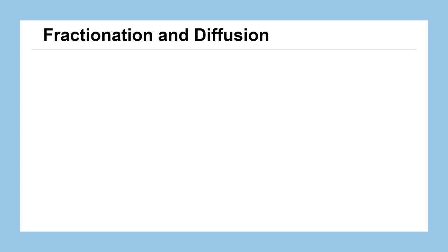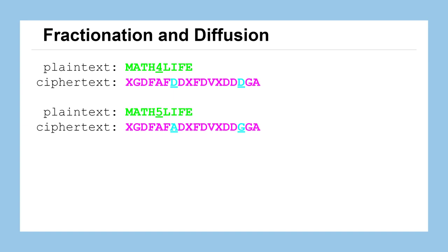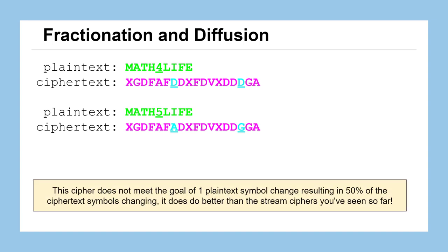Let's look at those characteristics — fractionation and diffusion — and see how much of each this cipher has. Focusing on the character '4' in the plaintext 'math 4 life,' it maps to D and D in the ciphertext. If we changed that to a '5,' we would have had two completely different characters in the ciphertext. So one character change does in fact make two characters change in the ciphertext. We haven't met the block cipher diffusion goal — where one change causes half the ciphertext to change — but this is the first time a single character change in the plaintext causes multiple character changes in the ciphertext. It does better than stream ciphers we've seen, though not as well as the block ciphers coming in the next lessons.